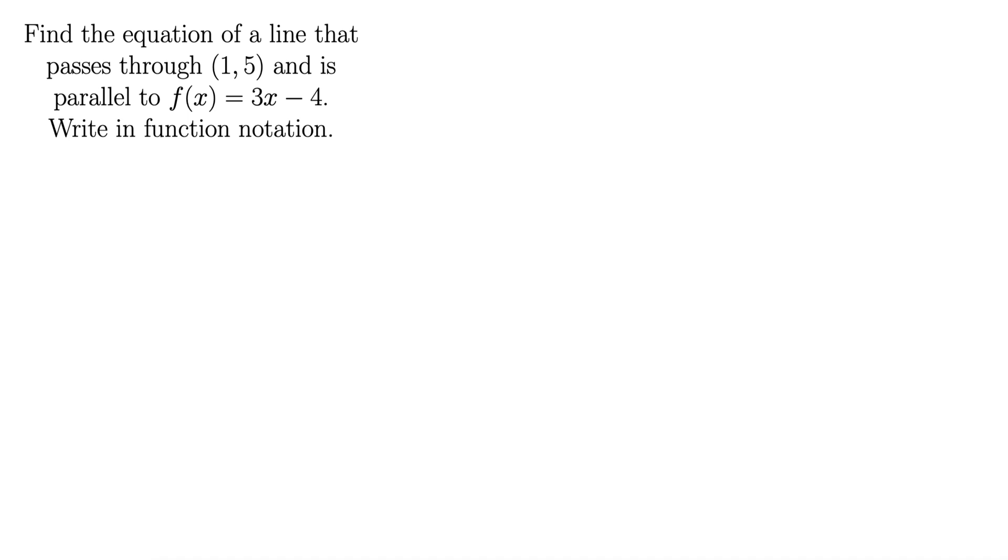This example asks us to find the equation of a line that passes through (1, 5) and is parallel to f(x) = 3x - 4. It also asks us to write that line in function notation.